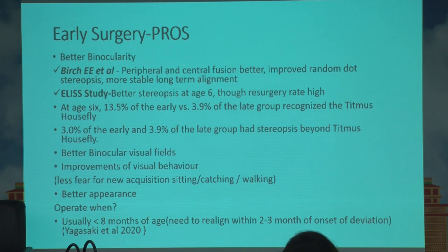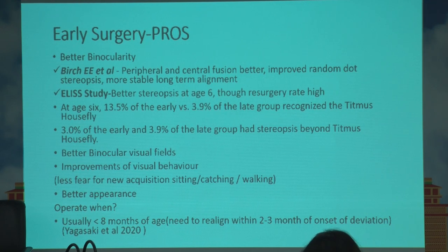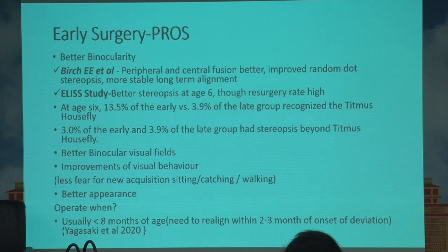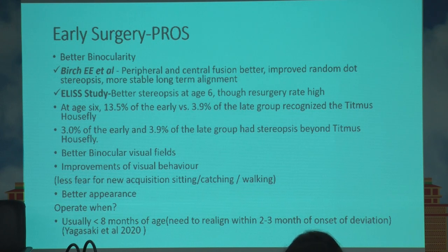The pros in favor of early surgery include better binocularity. Multiple studies — the LA study, Birch's studies — all say that at around age six, children who had early surgeries before one year of age have better stereopsis compared to those who had late surgeries around two and a half to three years. At least gross stereopsis is present in those who had early surgery, along with better binocular visual fields, better visual behavior, better motor skill development, and better cosmetic appearance. The trend now is to operate within six to twelve months of age, preferably before eight months.